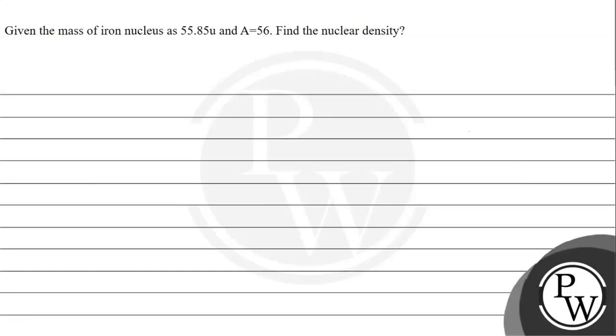Hello, let's read the given question. The question says: given the mass of iron nucleus as 55.85 units and atomic mass number as 56, find the nuclear density.